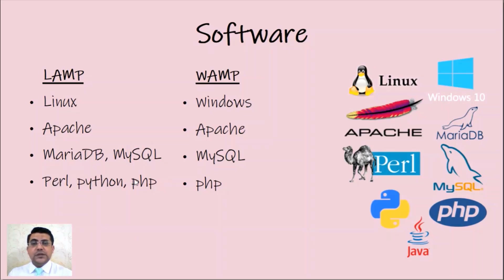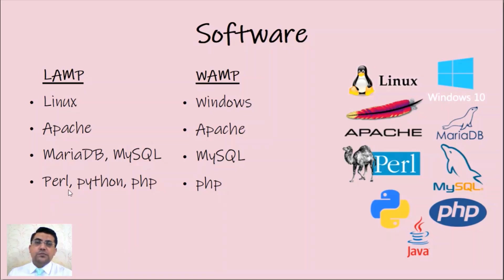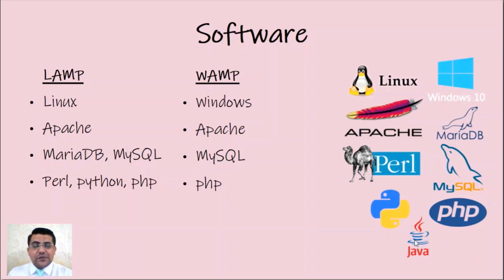For Windows, you know Apache is the server, MySQL is the database, and PHP is the scripting language. For example, if you are working on Koha, you need to work on Perl script. If you're working on PhpMyBiblia, you have to work on PHP. You can see the logos or signs of different systems like Linux, Windows, Apache, MariaDB, Perl, MySQL, Python, PHP, and Java. Java is everywhere, and there are lots of things like C++ and others.